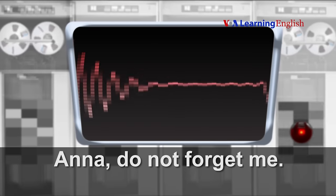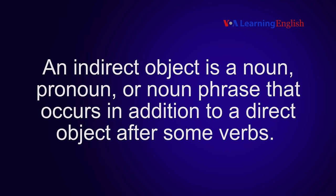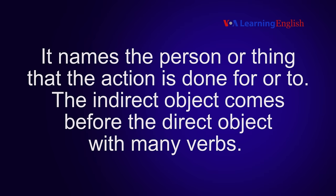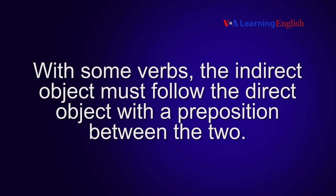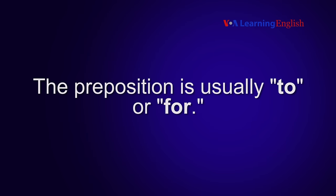Anna, do not forget me. An indirect object is a noun, pronoun, or noun phrase that occurs in addition to a direct object after some verbs. It names the person or thing that the action is done for or to. The indirect object comes before the direct object with many verbs. With some verbs, the indirect object must follow the direct object with a preposition between the two.